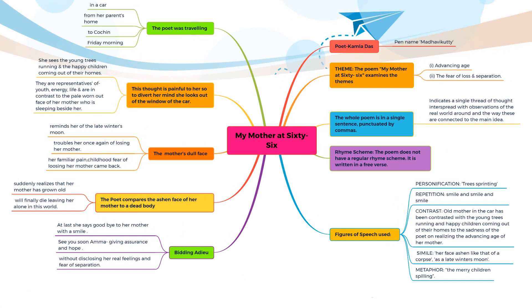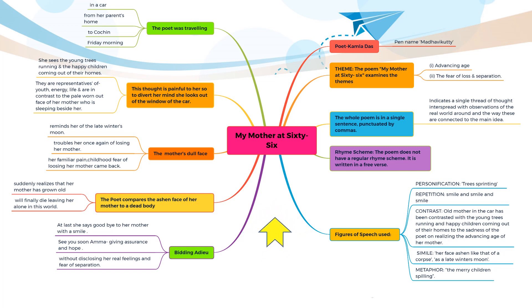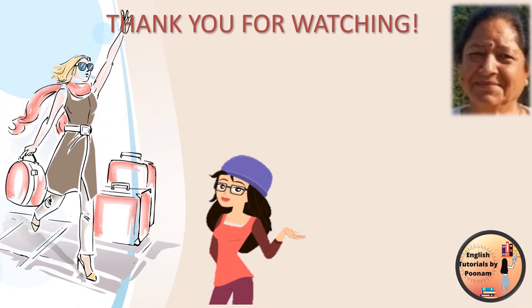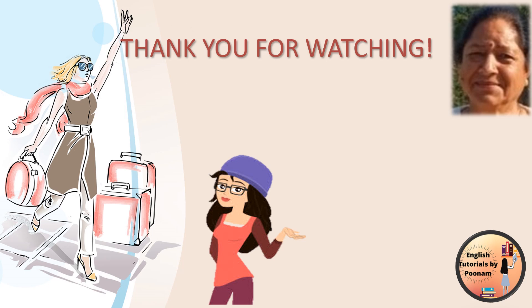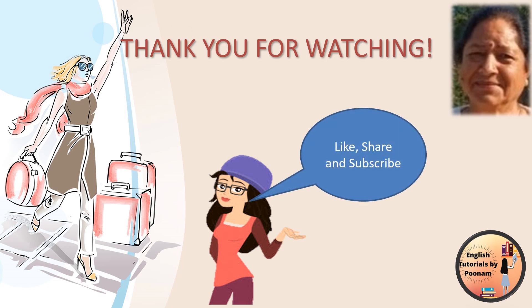On this slide you can see the complete mind map of the poem My Mother at 66 by Kamala Das. Through this, I have given you a complete overview of the poem and I hope that all your doubts are now clear and you have understood the poem thoroughly. Don't forget to leave a comment and share it with your friends. Thank you so much for watching right till the end. If you like the video, please hit the subscribe button and the bell icon. Keep watching English Tutorials by Poonam Thakur.